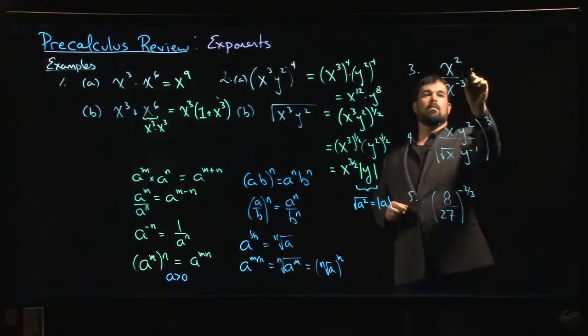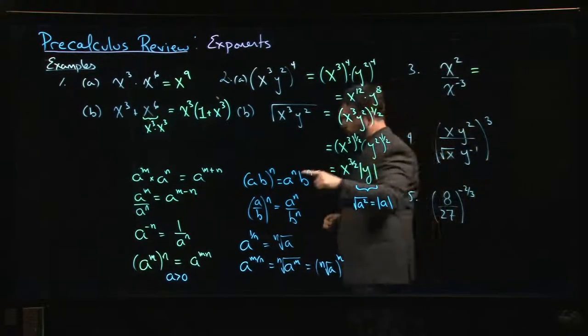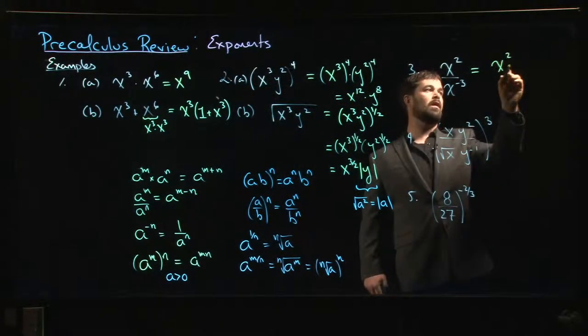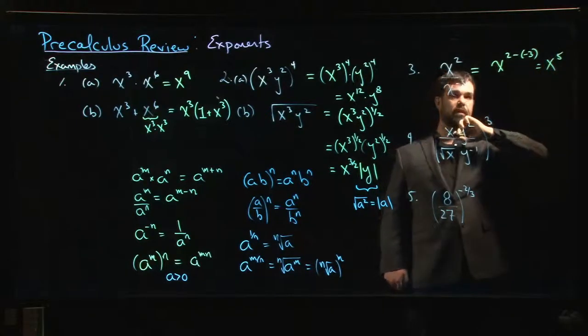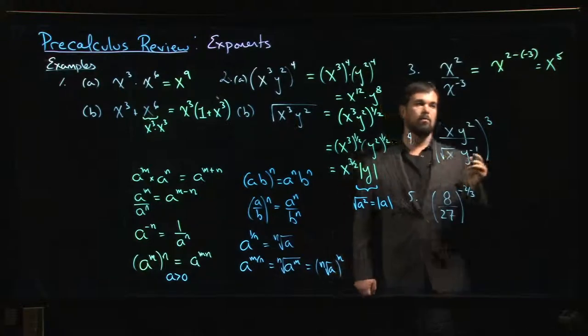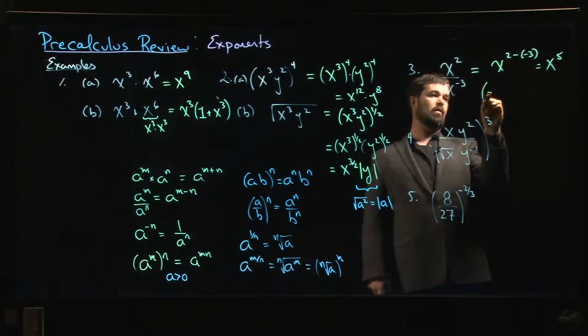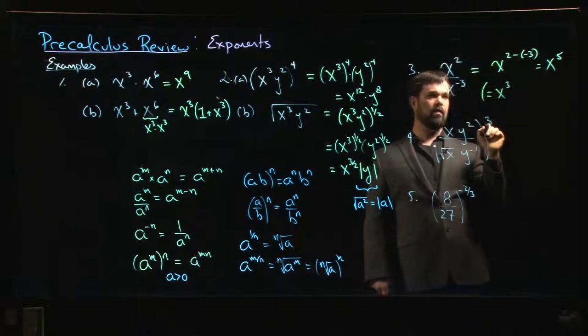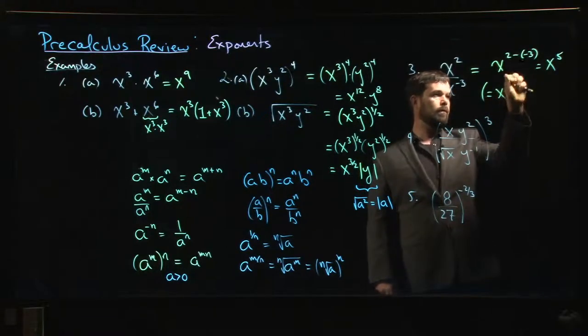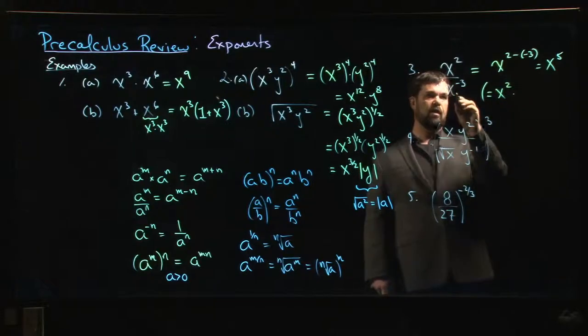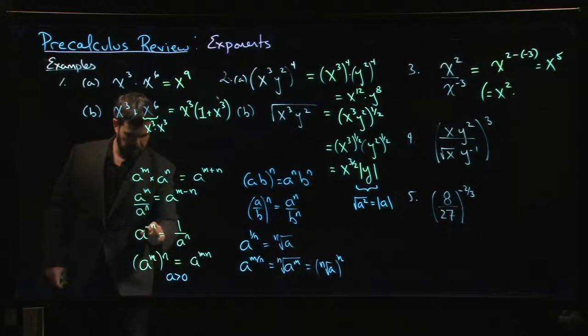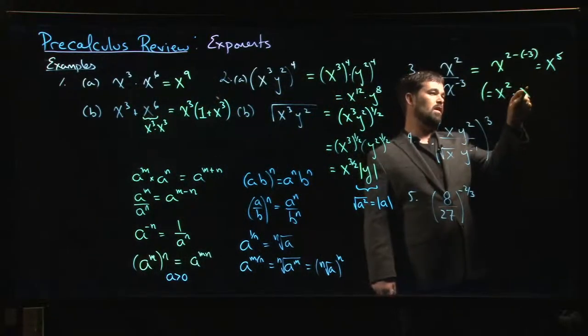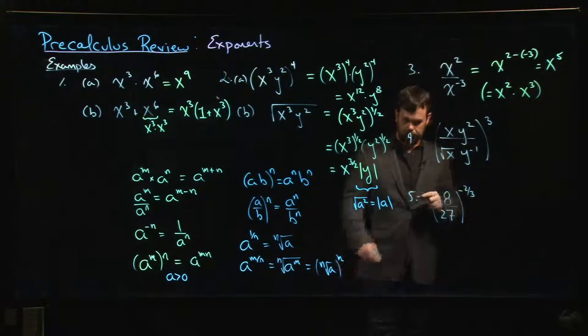How about this one? Well, there's two ways to think about it. One is to just apply the rule here directly: x², so it's 2 minus minus 3, x to the fifth. That's fine. The other thing you might do is say, well, that's the same thing. If the double negative is throwing you off, remember that what you've got here is x² times—so if you've got a negative exponent, you can bring it upstairs. This rule here could be rewritten. One over x to the minus 3 is the same thing as x to the 3. So a negative exponent on the bottom becomes a positive exponent on top.